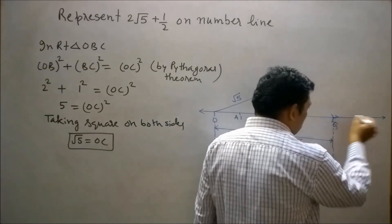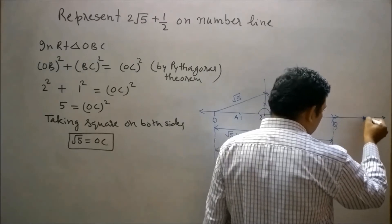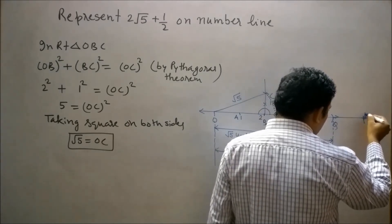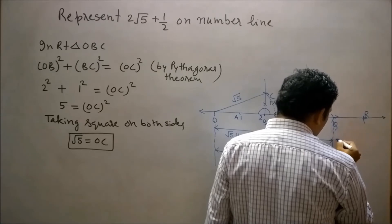Now move one unit distance to the right side of Q. Let's say this is point R and QR is equal to one unit distance.